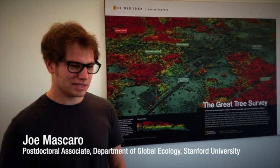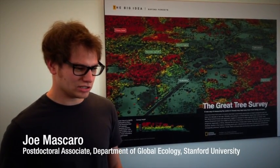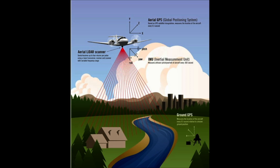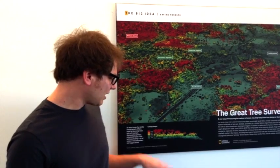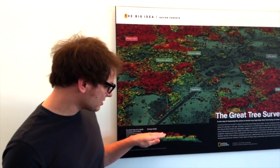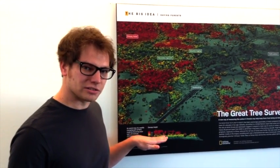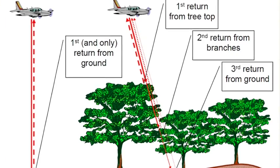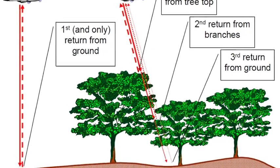LiDAR is an instrument that emits laser pulses. In this case we use an aircraft to send lasers down, and the laser essentially bounces around in the forest and comes back up to the instrument on the aircraft. We get a nice ranging of distances — where leaves are, where branches and tree crowns are, and so forth. In many ways this LiDAR can be compared to those devices that the police use for measuring speed when we are in a car.